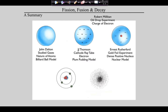Then along comes Ernest Rutherford. We're back in England now. Rutherford did a thing called the gold foil experiment. What he did is he shot radioactive particles at a sheet of gold. This is also an experiment you need to know, so you may want to circle it. By doing that, he discovered the nucleus and gave us the nuclear model of the atom.